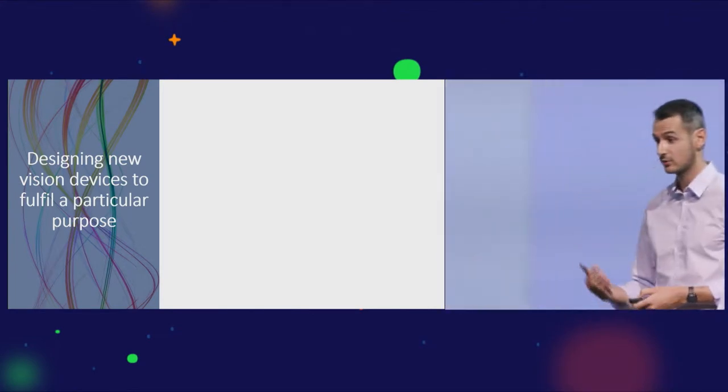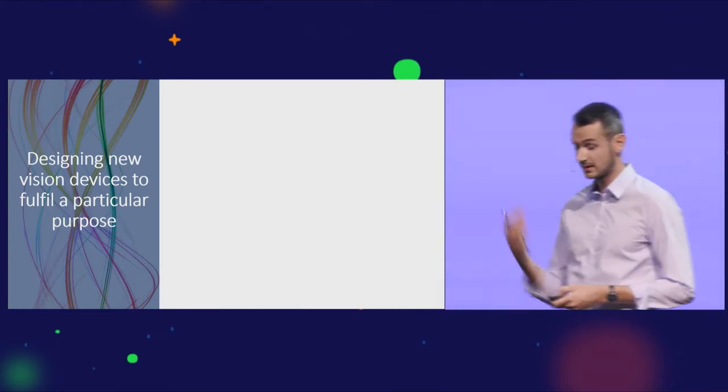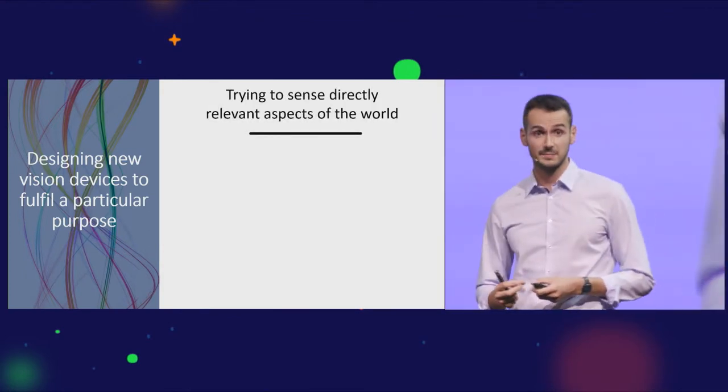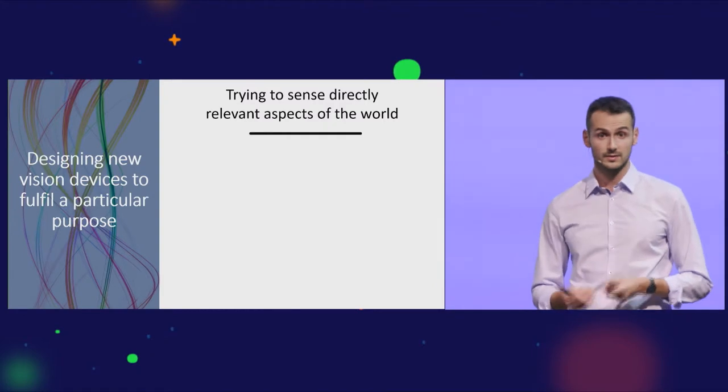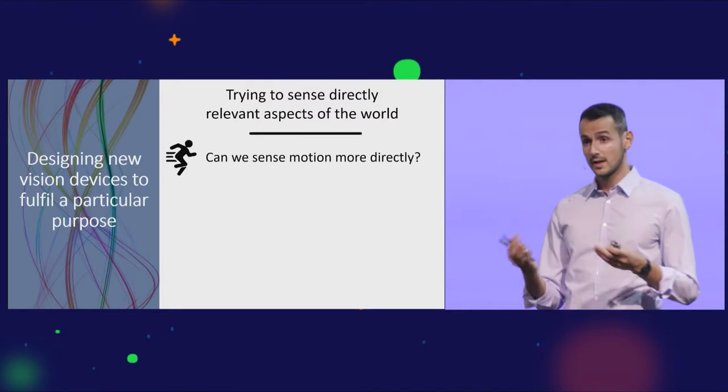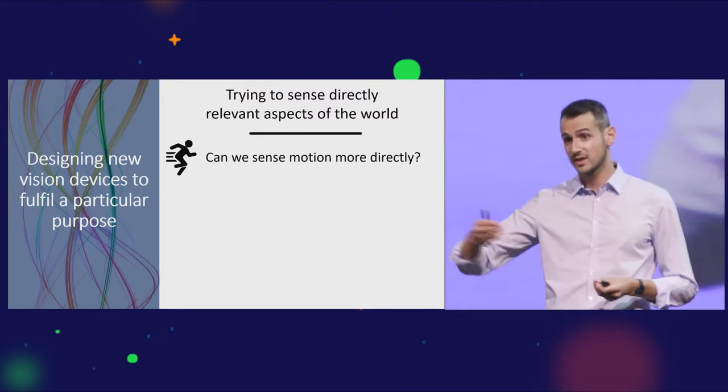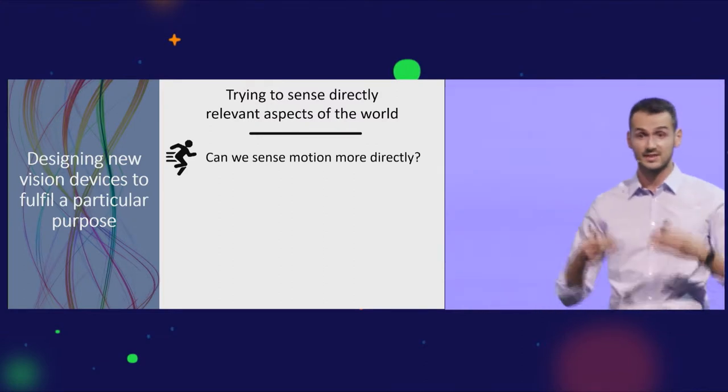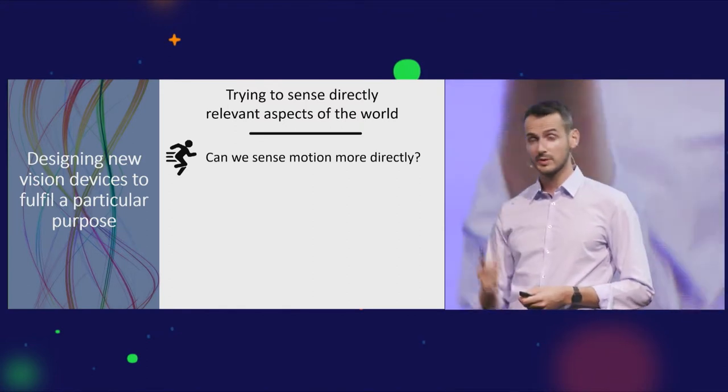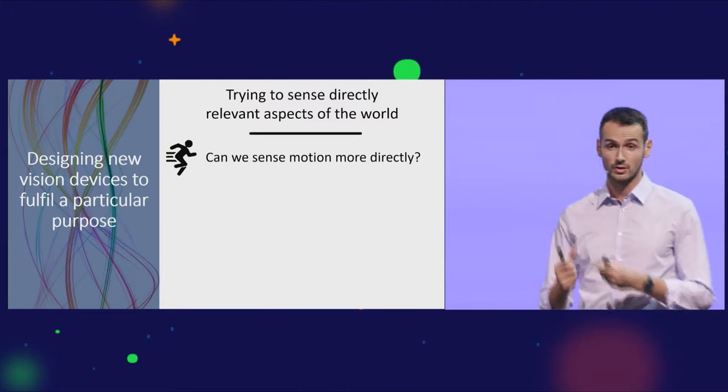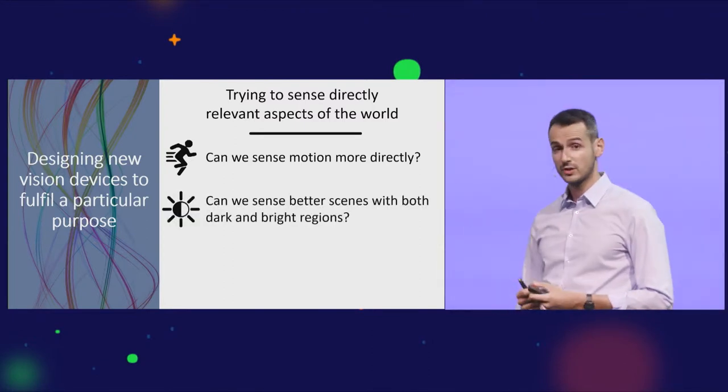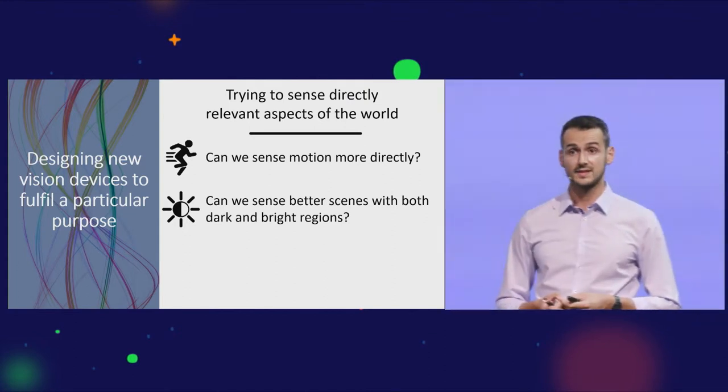This is the field of computational imaging. Interestingly, trying to sense directly the relevant aspects of the world might alleviate the burden put on the processor side. Let's say we're interested in motion. With conventional cameras you would take a succession of static frames. Why not have a sensor that would only report parts of the scene that actually change? Low data rates and other advantages.